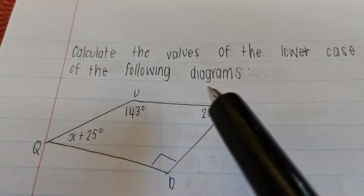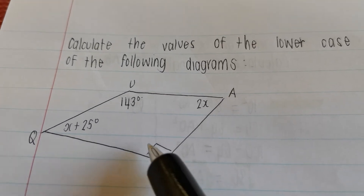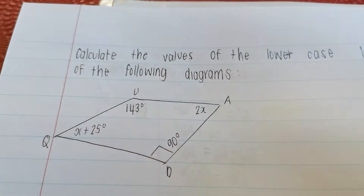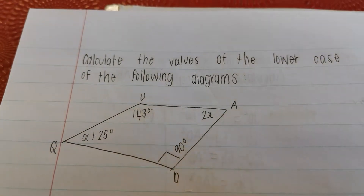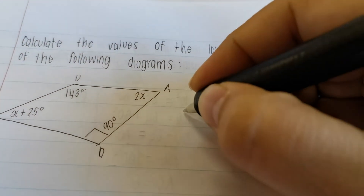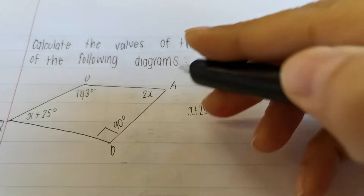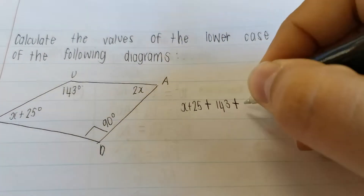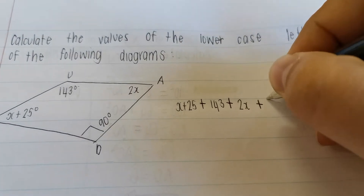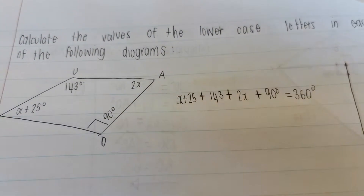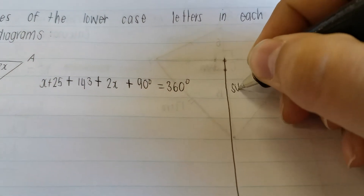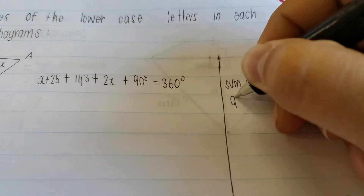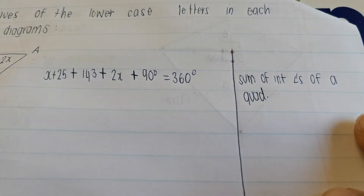We know that all the angles in a quadrilateral added together give us 360 degrees — meaning this plus this plus this plus this gives 360 degrees. This angle has the right-angle symbol, meaning it's 90 degrees. So: X plus 25 plus 143 plus 2X plus 90 equals 360. The reason is sum of interior angles of a quadrilateral.